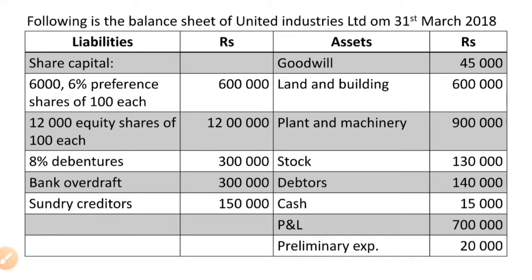Let me read the question. On the liability side: share capital — first, 6% preference shares of Rs.100 each, amount Rs.6 lakh; 12,000 equity shares of Rs.100 each, amount Rs.12 lakh; 8% debentures Rs.3 lakh; bank overdraft Rs.3 lakh; sundry creditors Rs.1,50,000.